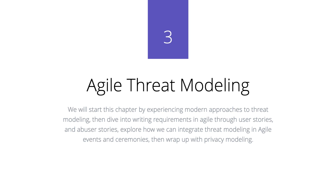We will start this chapter by experiencing modern approaches to threat modeling, then dive into writing requirements in Agile through user stories and abuser stories, explore how we can integrate threat modeling in Agile events and ceremonies, then wrap up with privacy modeling.